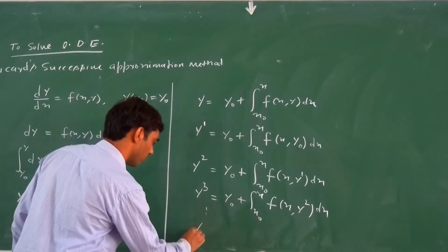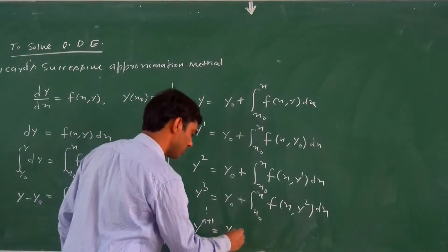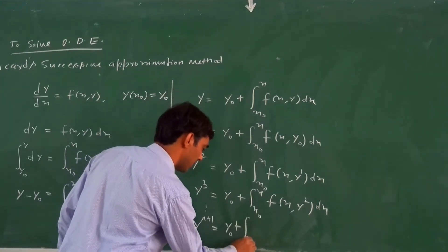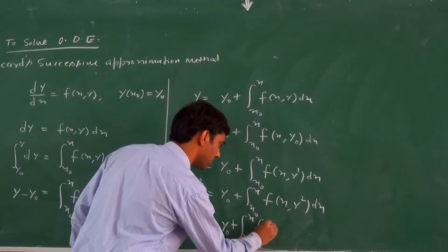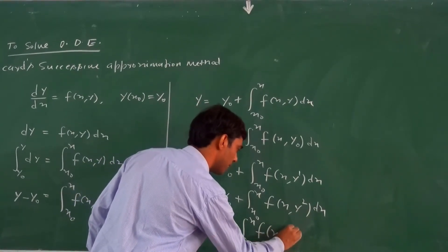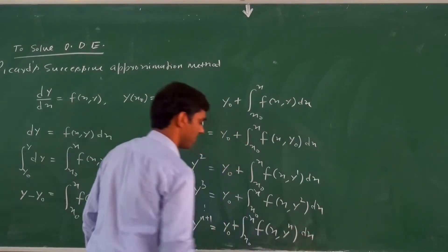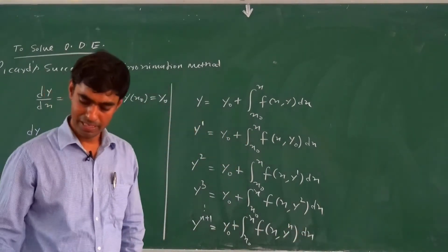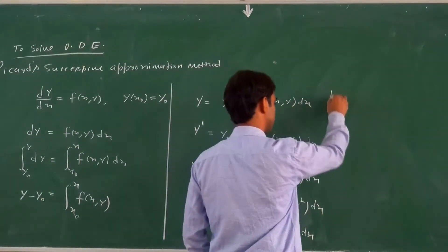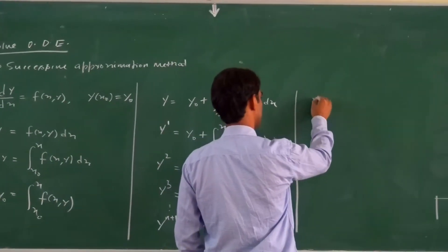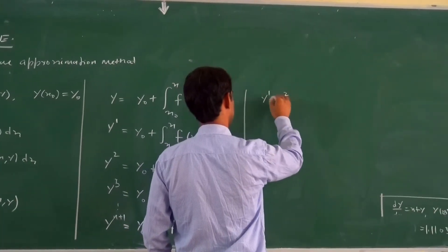In general, yₙ₊₁ = y₀ + ∫(x₀ to x) f(x, yₙ) dx. This gives us a sequence of values y₁, y₂, y₃, and so on.